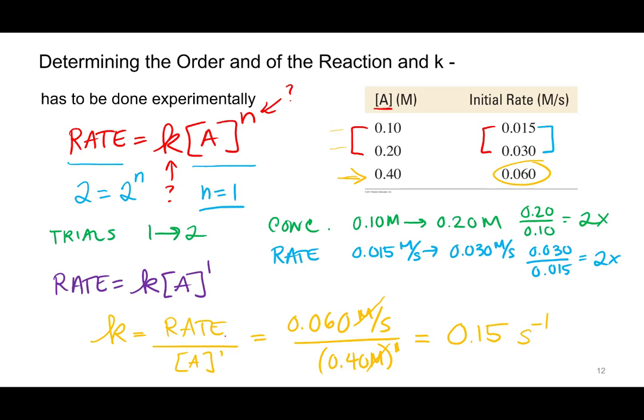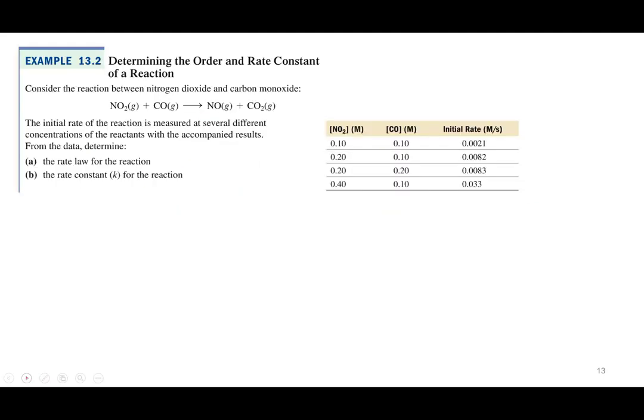When you have more than one reactant — for instance, NO₂ reacting with CO — you want to find the rate law: rate equals k times the concentration of NO₂ raised to some power m, times CO raised to some power n. We're looking for the individual rate orders for both NO₂ and CO.